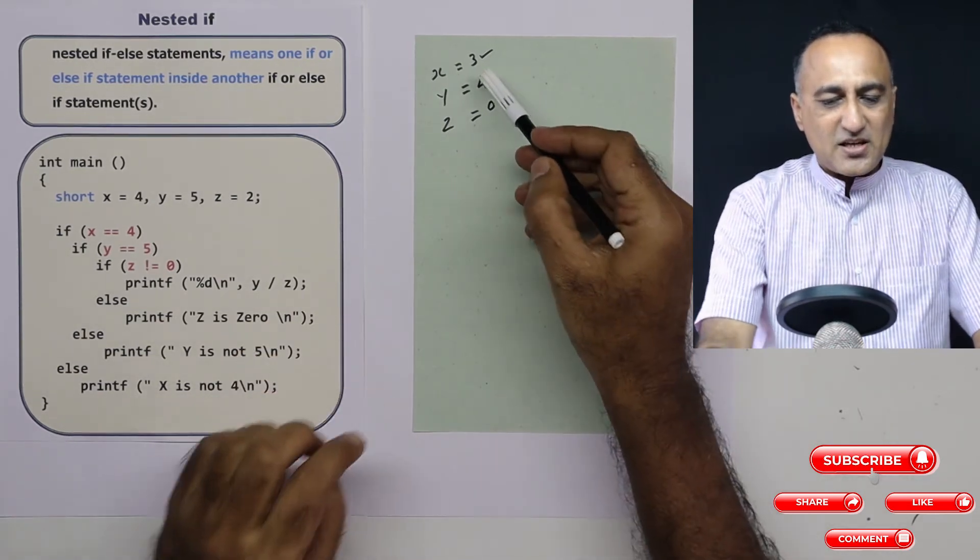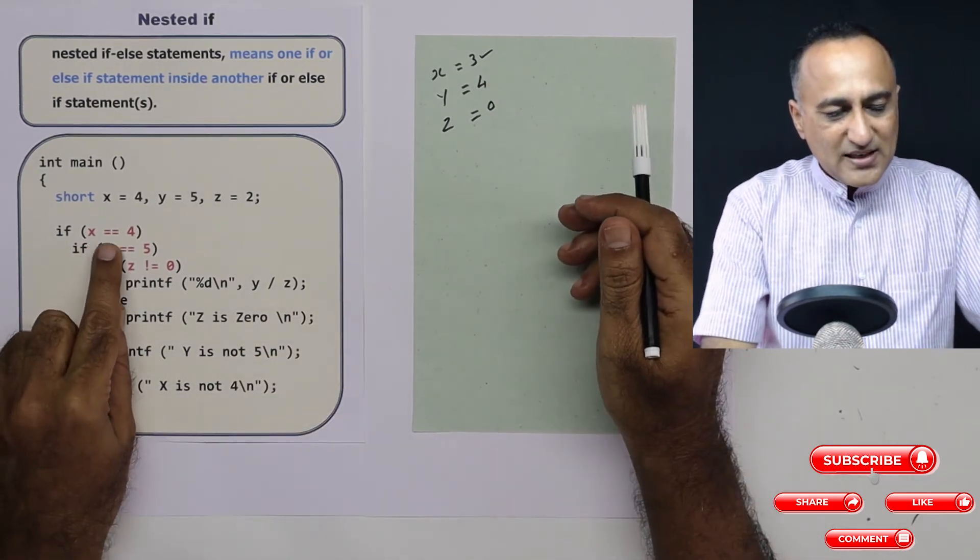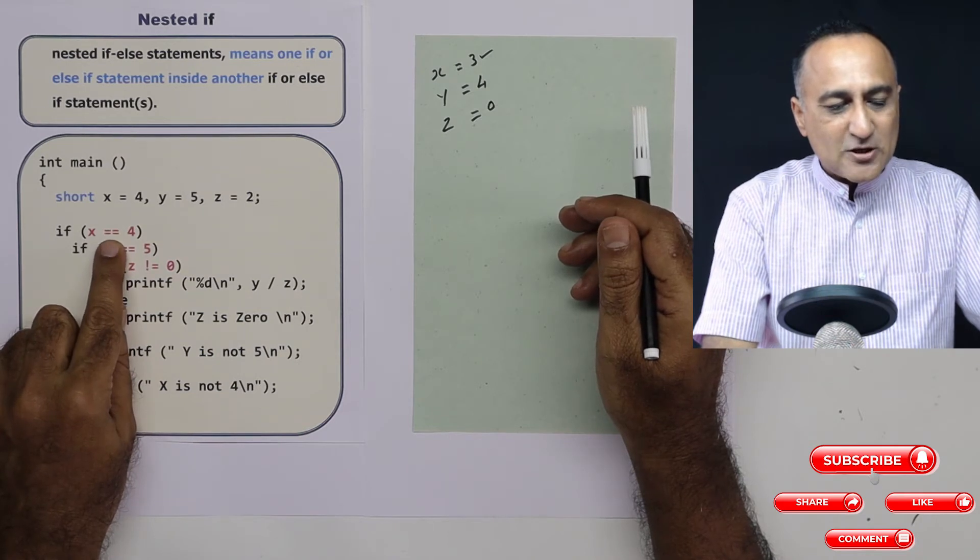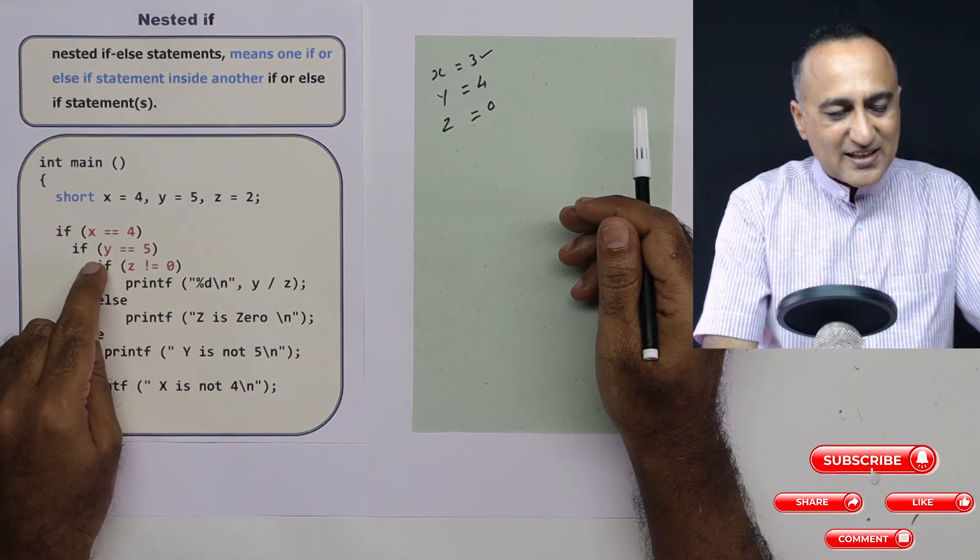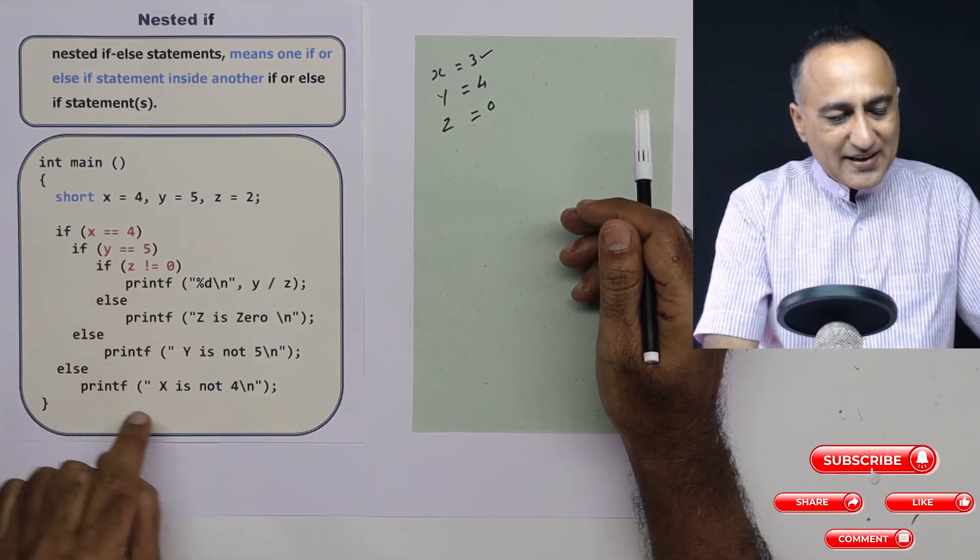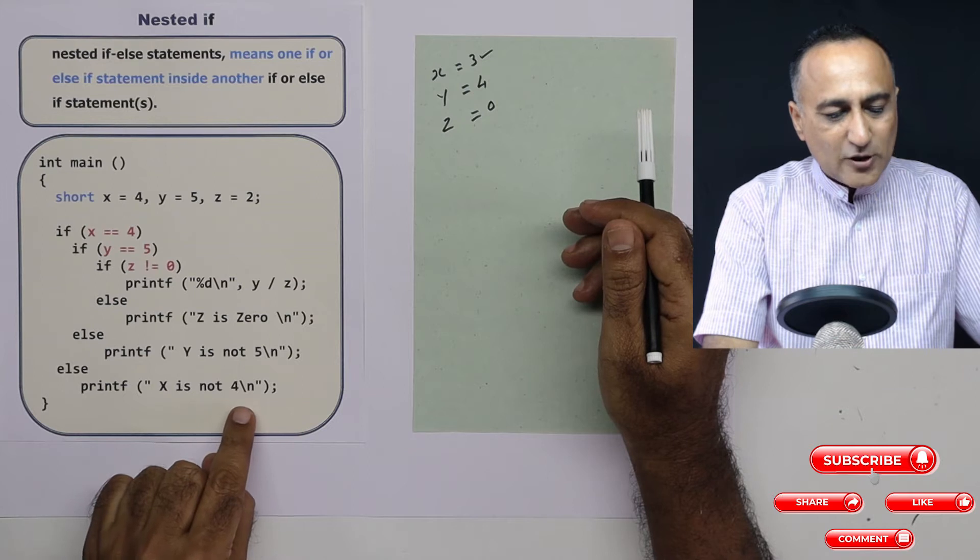So let's take this case when x is 3. When x is 3, 3 is equal to 4, this condition is false. So since this condition is false, it will not go to any of this other ifs. It will directly come and print x is not 4.